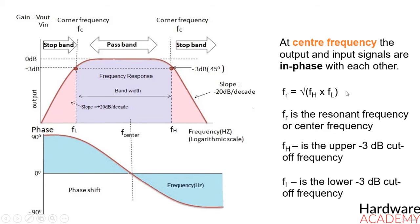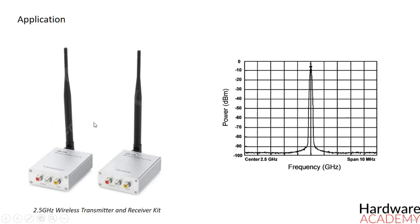Bandpass filters are widely used in wireless transmitters and receivers. The main function of such a filter in a transmitter is to limit the bandwidth of the output signal to the band allocated for the transmission. This prevents the transmitter from interfering with other stations.